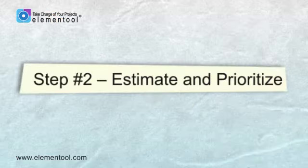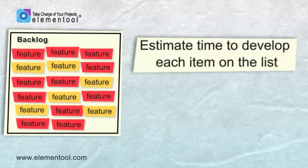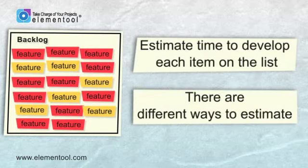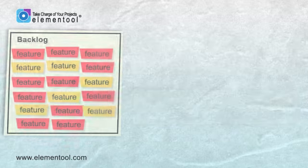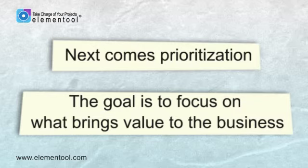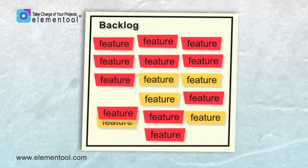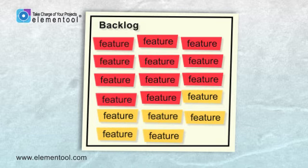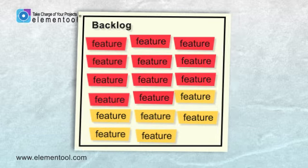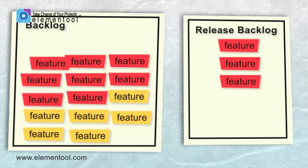Step 2 is estimate and prioritize. After completing the backlog list, the product owner estimates how long it would take to develop each item on the list. There are different ways to estimate, and I'll explain them in another clip. Next comes prioritization — the goal is to focus on what brings value to the business. The product owner sorts the backlog items by priority, from the most important at the top to the least important at the bottom, picks the features that should be included in the release, and creates the release backlog.